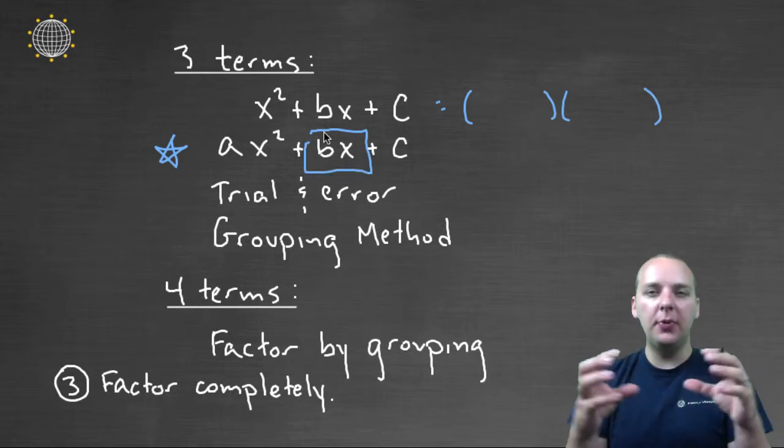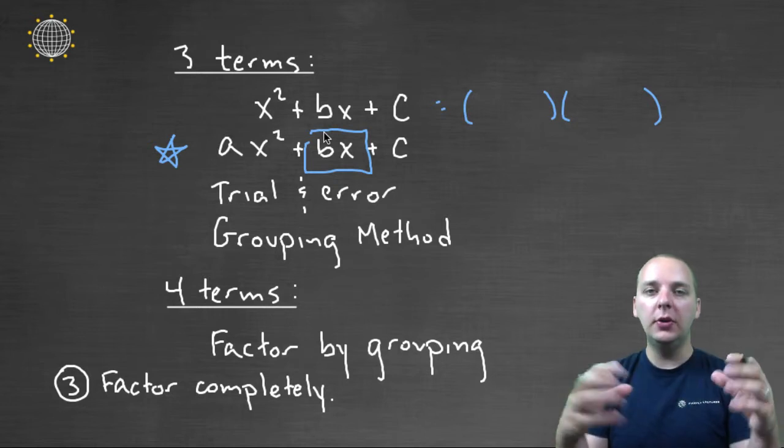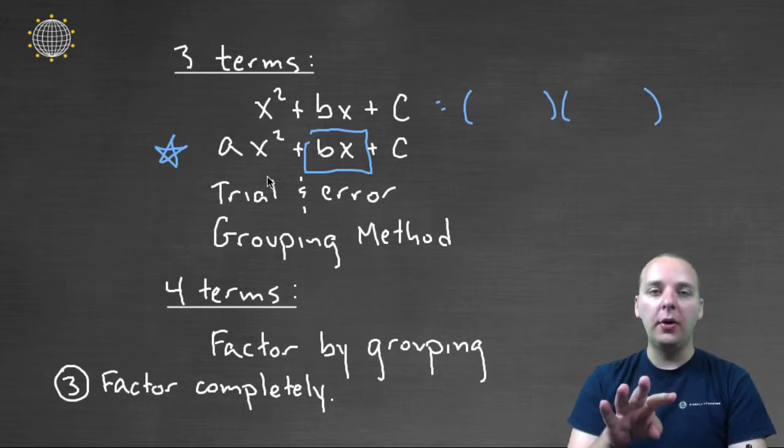I'm not going to get into the details, but separate it into two terms. And then you have four terms instead of three because you've separated the middle term. And then you can do factor by grouping on these guys here.